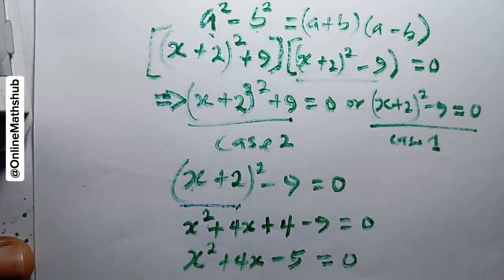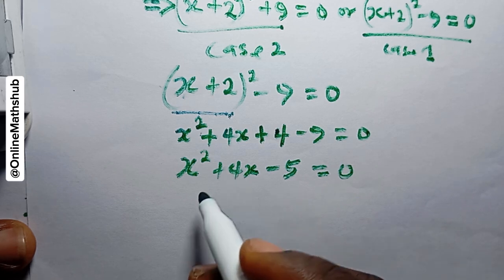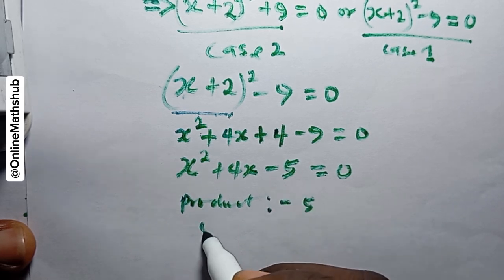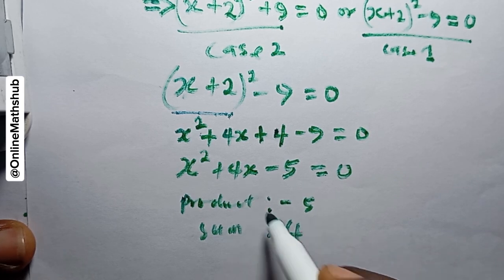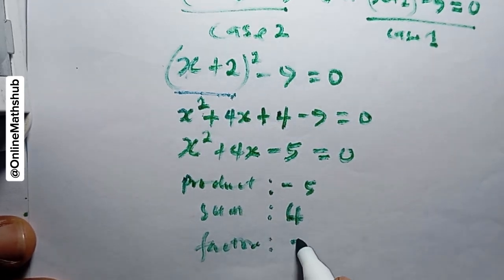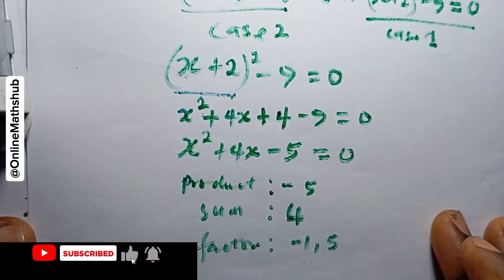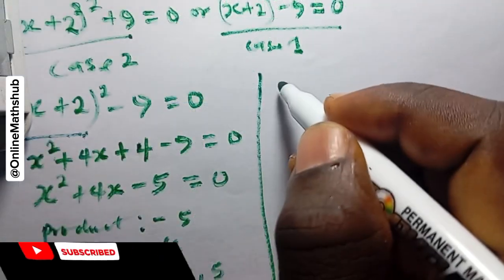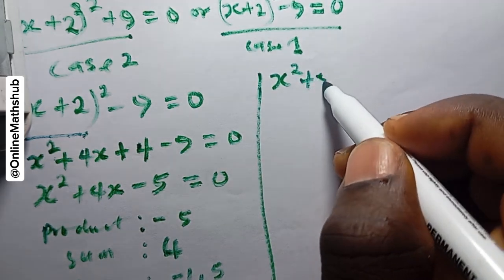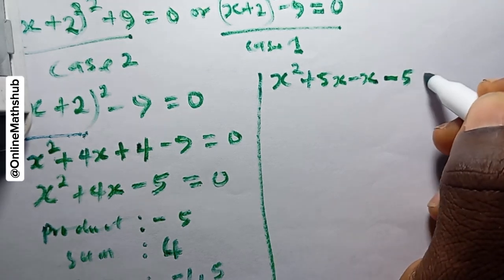Simplifying gives x² + 4x - 5 = 0, which is a factorable quadratic. We need two numbers that multiply to -5 and add to 4. Those are 5 and -1, since -1 × 5 = -5 and 5 + (-1) = 4. So we rewrite 4x as 5x - x.